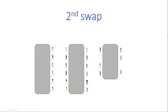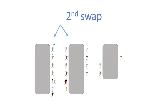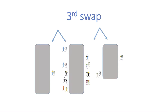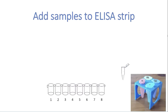For the second swap, students from the right-hand side of the screen move to the left-hand side and swap bodily fluids there. Again, everybody tells each other what number tube they have and writes it down when they return. For the third swap, students on the left-hand side swap with each other, and students on the right-hand side swap with each other. Again, everybody records what number tube their partner had, and every student returns to their own bench.